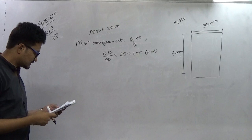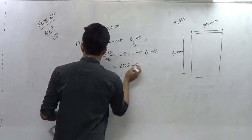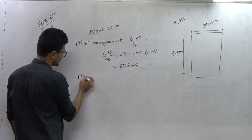So from here the minimum area comes out to be 205 mm square. And maximum area percentage is given by: